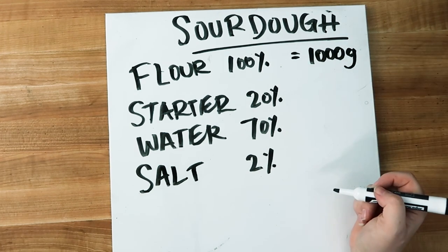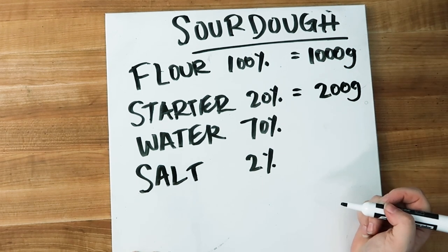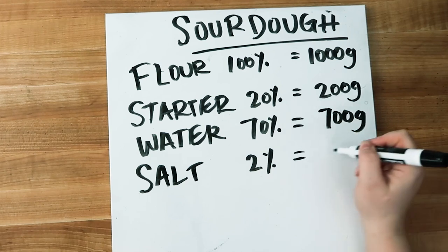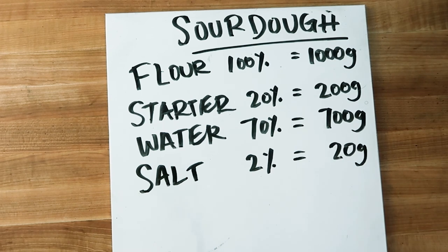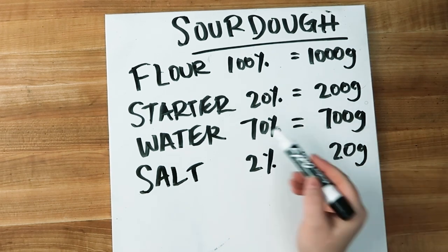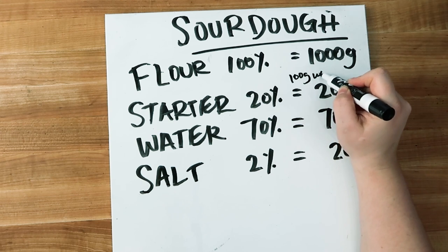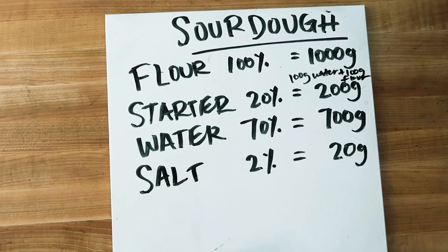Let's do our calculations setting the flour at 1000 grams. For our starter, multiplying 1000 by 0.2 gives us 200 grams. Our water is going to be 700 grams and our salt is going to be 20 grams. Now if you want to know the final hydration of this dough, you need to account for the fact that your starter is half water and half flour — so 100 grams of flour and 100 grams of water from the starter need to be calculated into your final hydration formula, because we have 200 grams of starter in our dough.